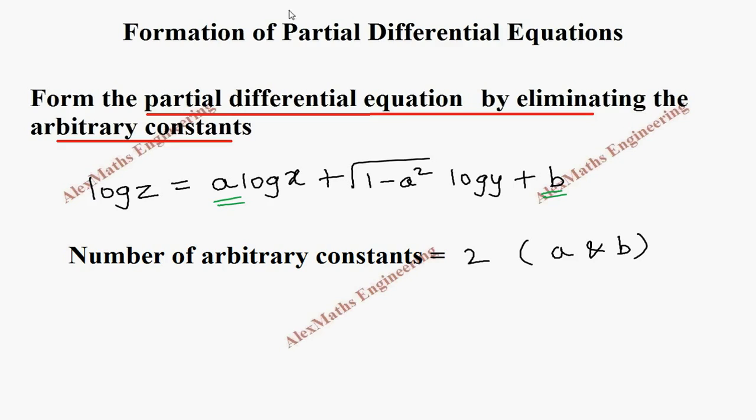In the same way, we notice the number of independent variables are 2 and they are x and y. So number of independent variables equal to 2 and they are x and y.